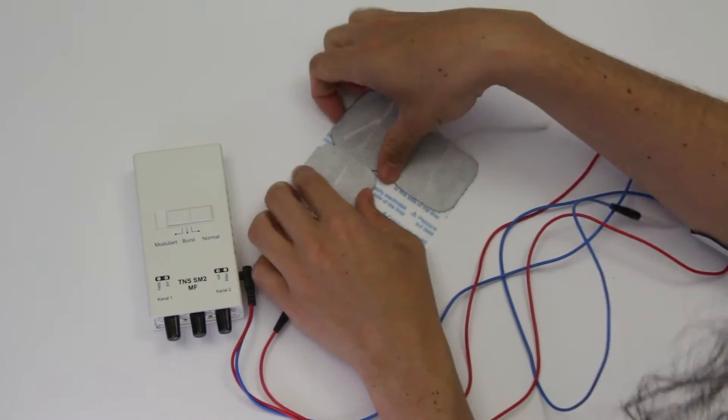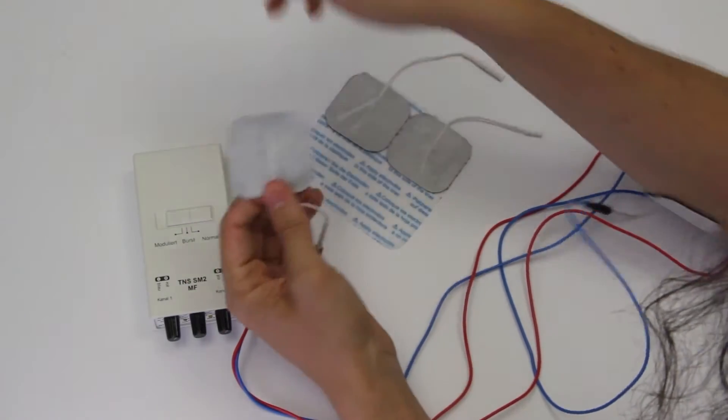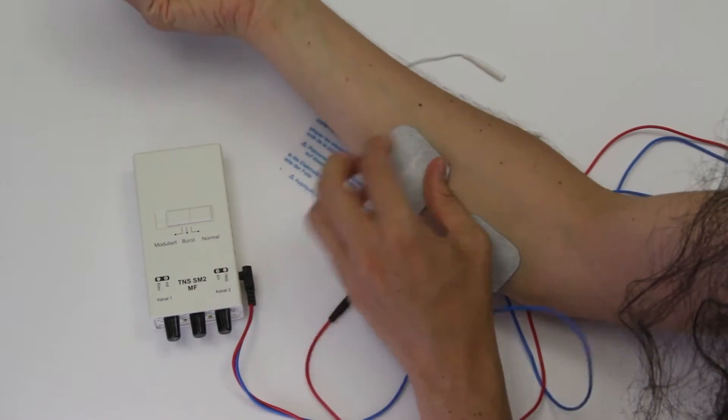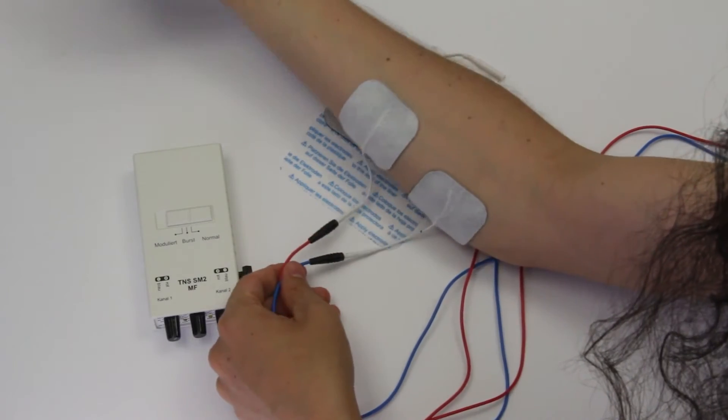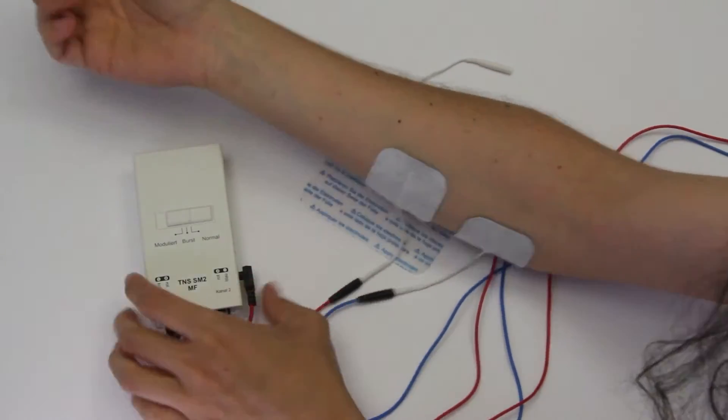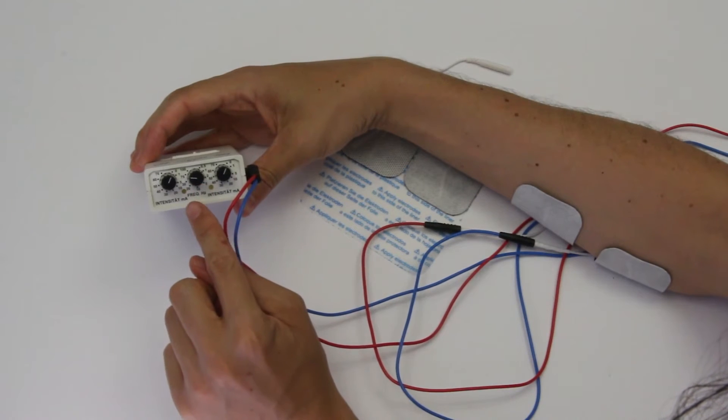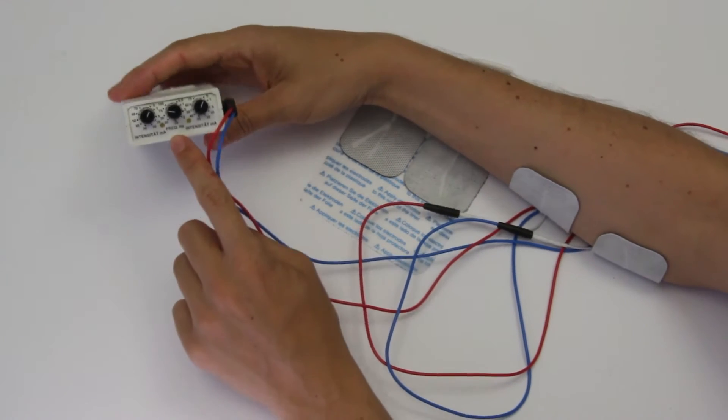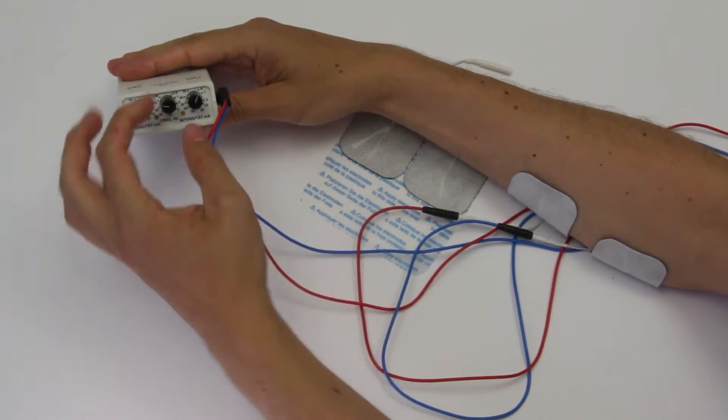So I place one electrode, the negative, on the base of the muscle and the positive slightly further away. Now I'm going to very slowly with the frequency at 70 hertz, I'm going to very slowly open the intensity channel.